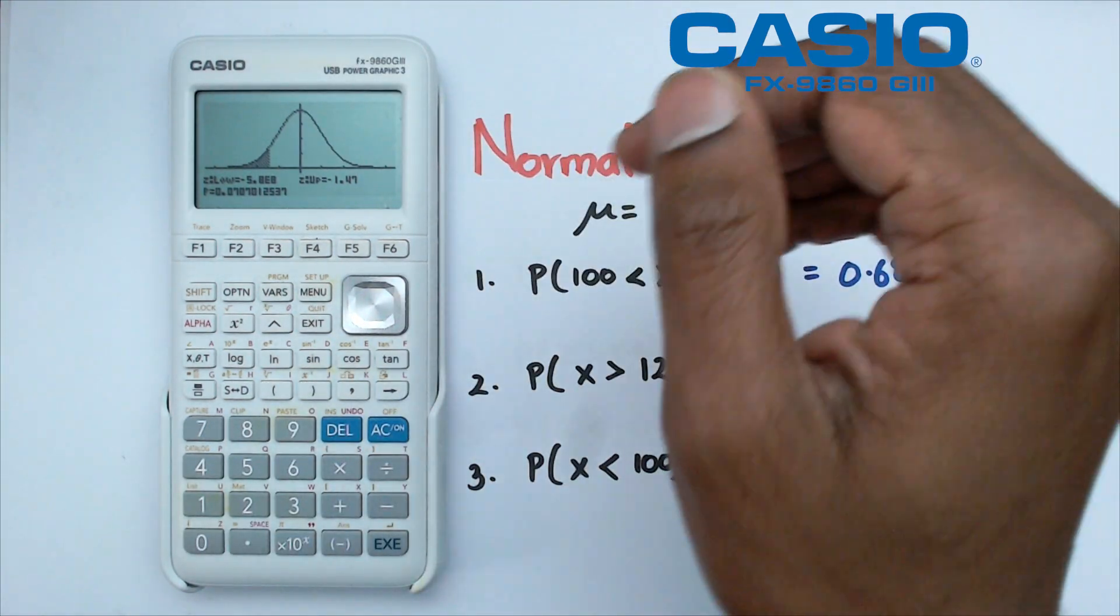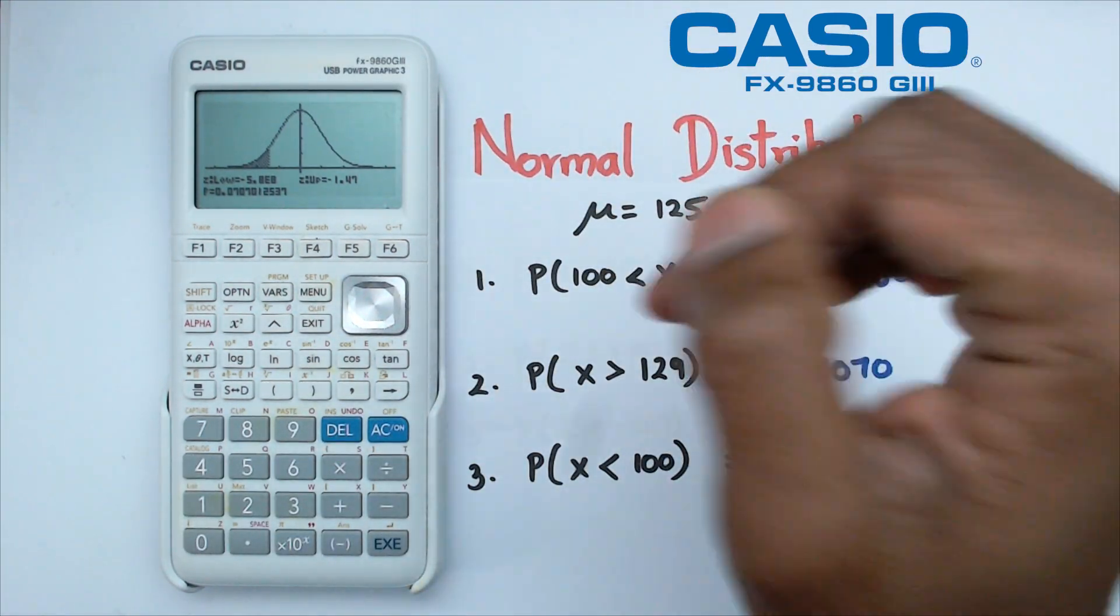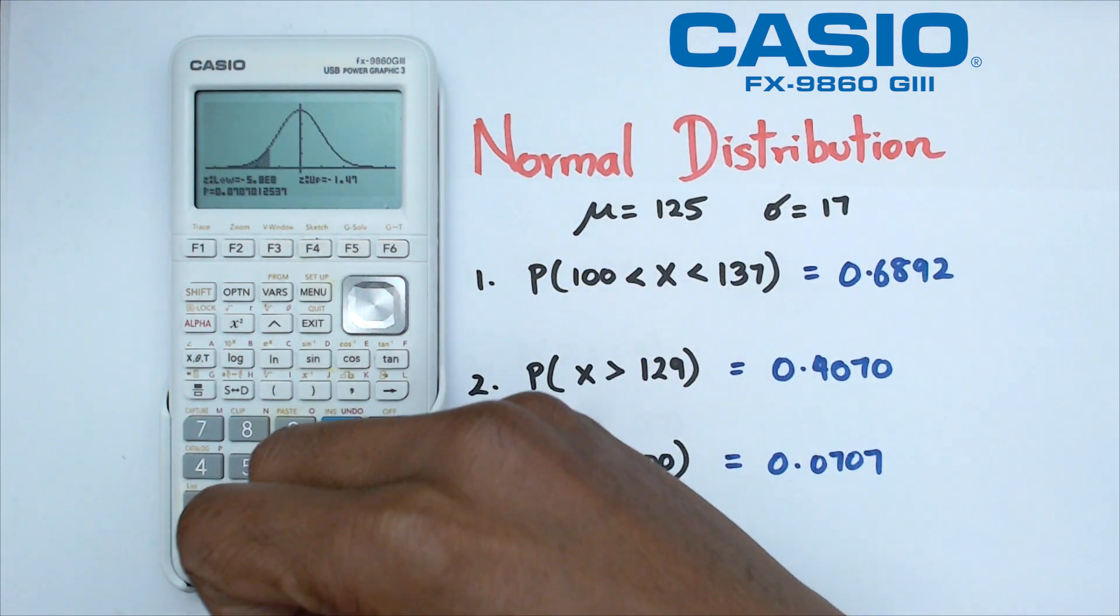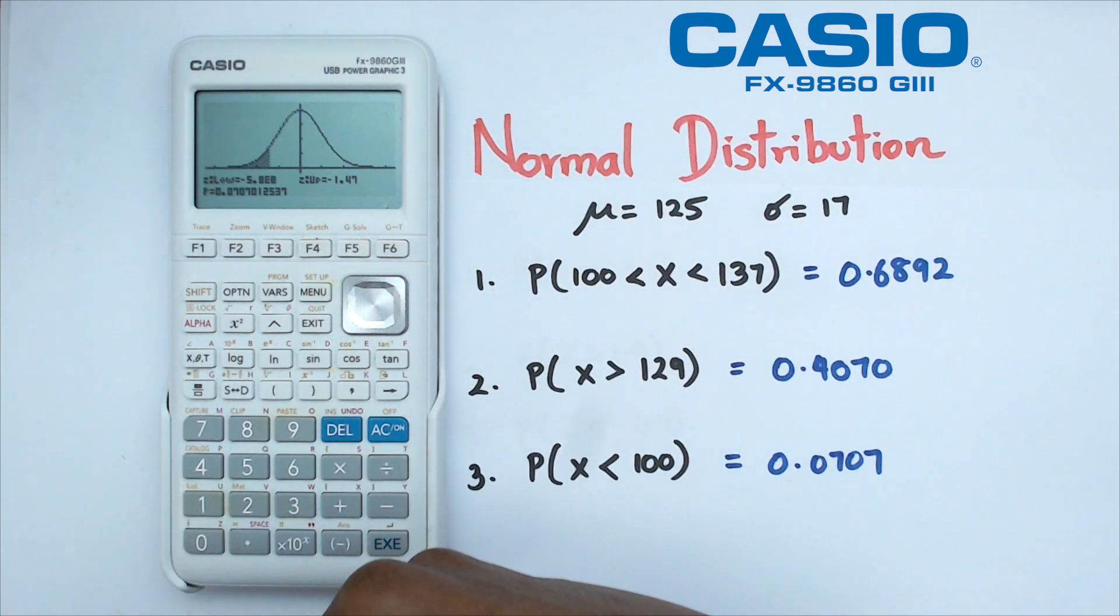And folks, that's pretty much how you do normal distribution when the mean and standard deviation are not your standard 0 and 1 on this particular Casio graphics calculator.